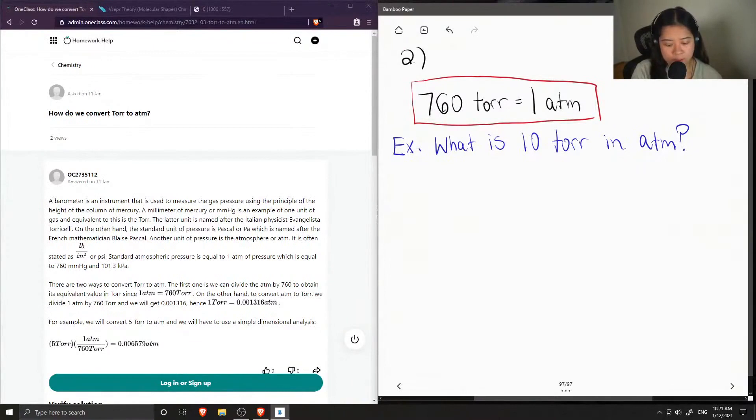So first, I like to show that what we're solving for will be denoted as X. So we're solving for ATM. So X ATM over 10 TOR, which is what we're given in the question, is equal to...